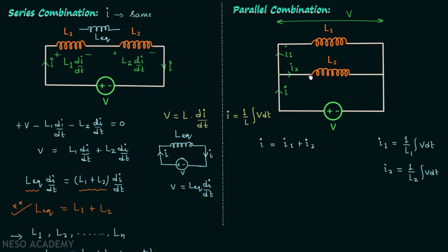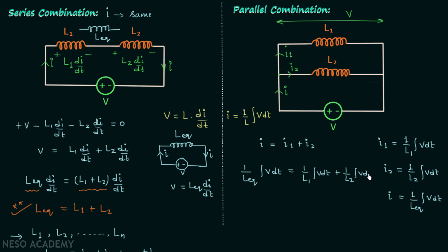When we have the equivalent inductor, the current I equals (1/L_eq)·∫V dt. Substituting I1, I2, and I into the KCL equation, we get (1/L_eq)·∫V dt equals (1/L1)·∫V dt plus (1/L2)·∫V dt. Therefore, 1/L_equivalent equals 1/L1 plus 1/L2.